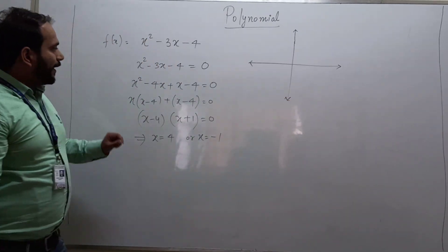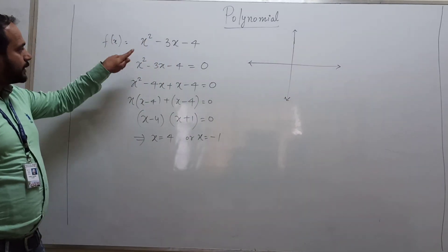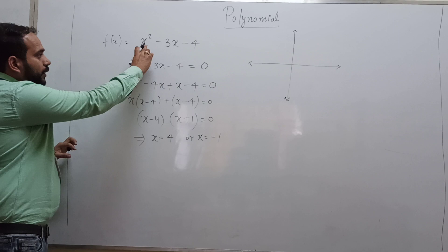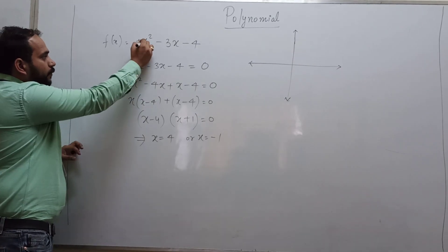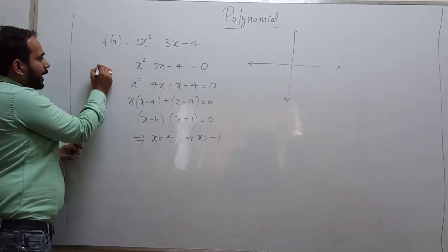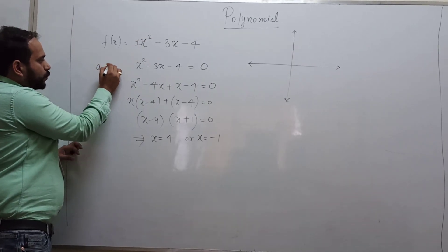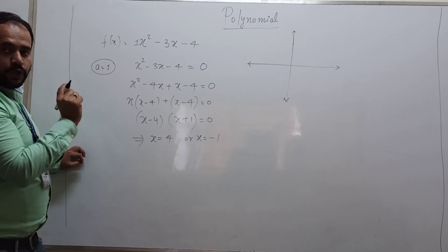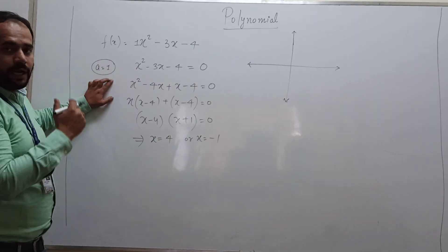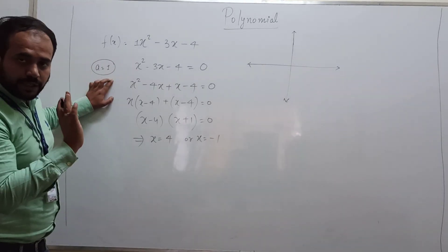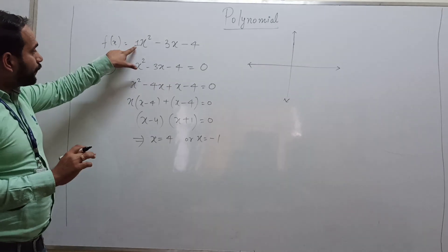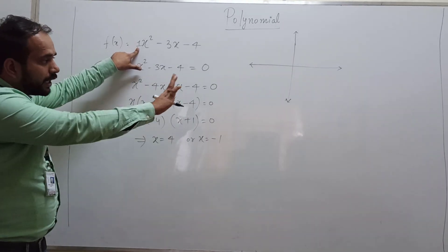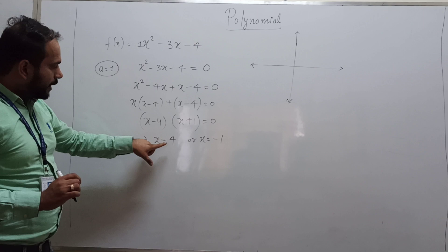You have to check the sign of the coefficient of x squared. Here, the coefficient of x squared is 1, so a is positive. If a is positive, the parabola will open in the upward direction. If a is negative, it will open in the downward direction. I will show you this in the graph.